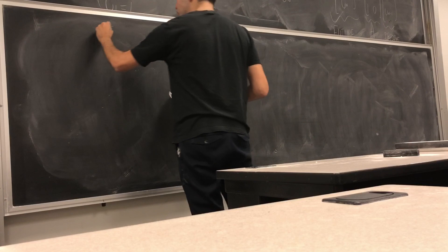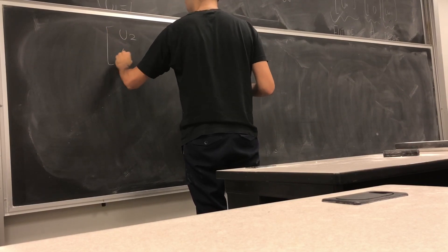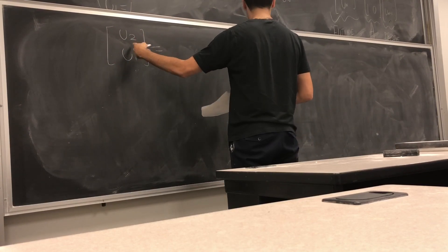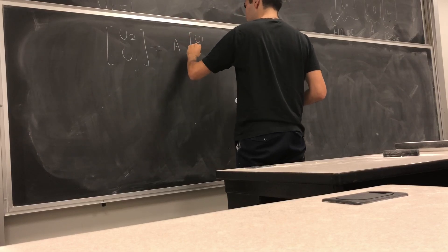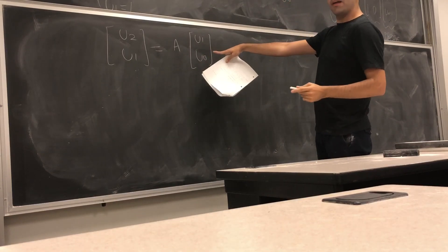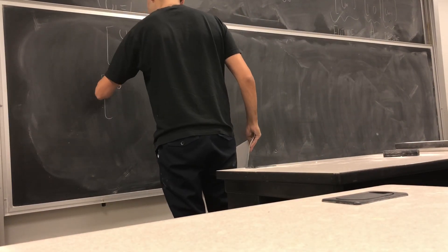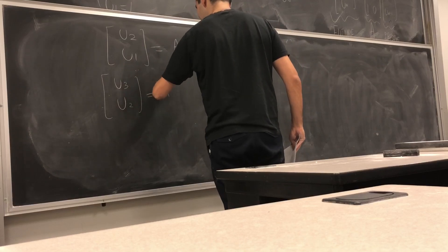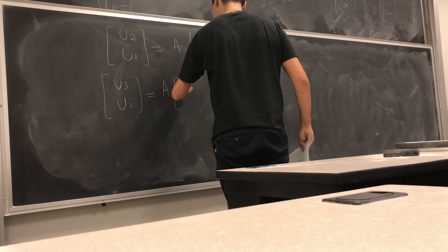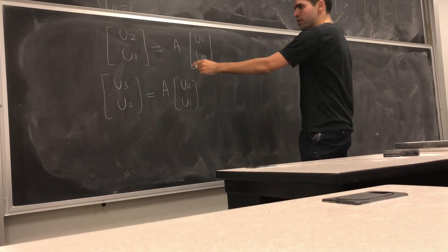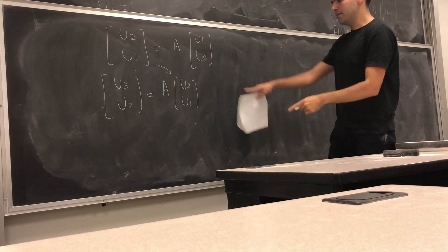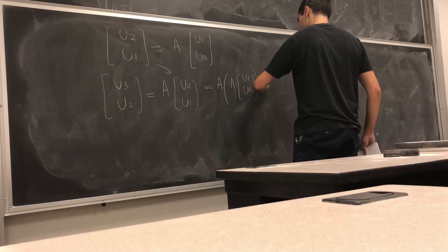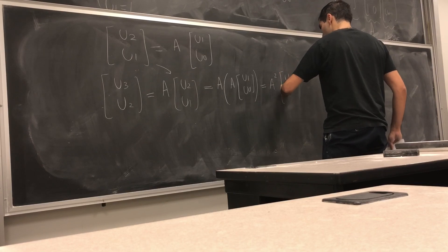For example, how would we calculate [u_2, u_1]? All you do is take your present term [u_1, u_0] and multiply it by the matrix A. How would you calculate [u_3, u_2]? That's A times [u_2, u_1], but [u_2, u_1] is just A times that, so it becomes A times A times [u_1, u_0], which is A squared times [u_1, u_0].